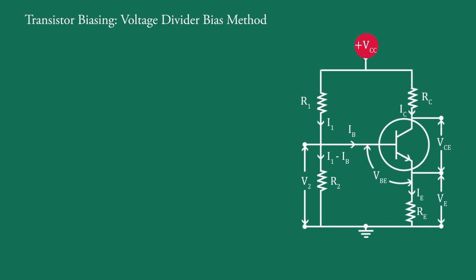This is positive terminal of the supply VCC and here is negative terminal of the supply VCC, and these two resistances are thus across it. The name voltage divider comes from the voltage divider formed by R1 and R2. The voltage drop across R2 provides the base emitter junction. This causes the base current and hence collector current flow in the zero signal conditions.